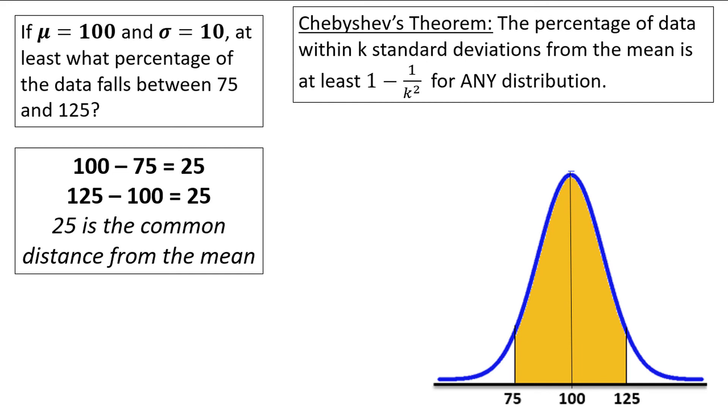We can verify here that both 75 and 125 are 25 units away from the mean of 100. 100 minus 75 is 25, and 125 minus 100 is also 25. This is a really important point. Chebyshev's theorem only works with numbers equally spaced out from the mean. So now we know the common difference is 25, but the question is, how many standard deviations is this? What is our value for k?